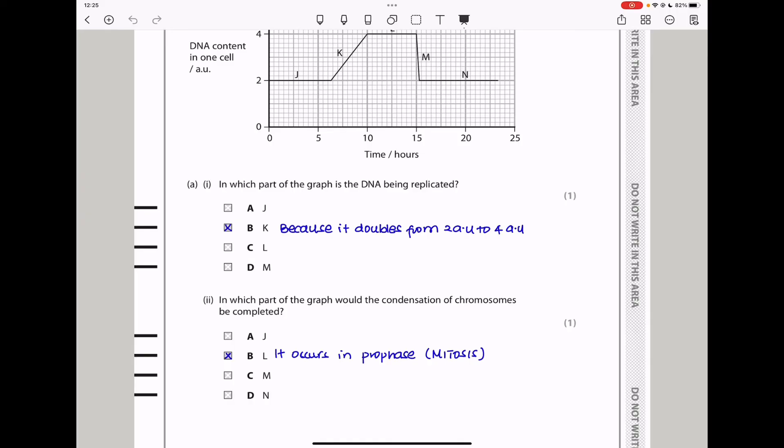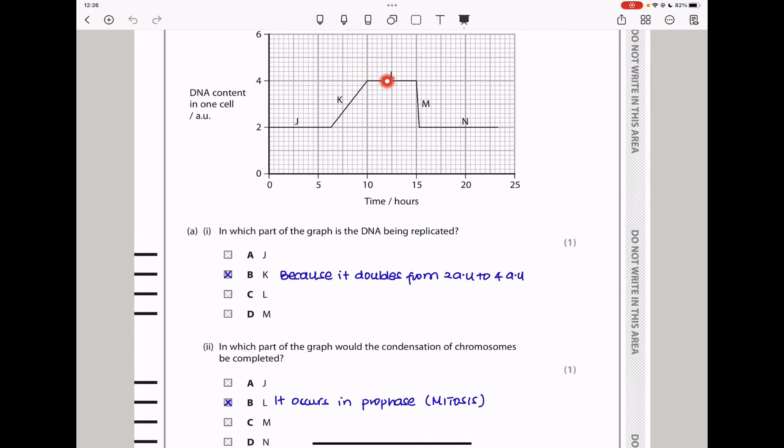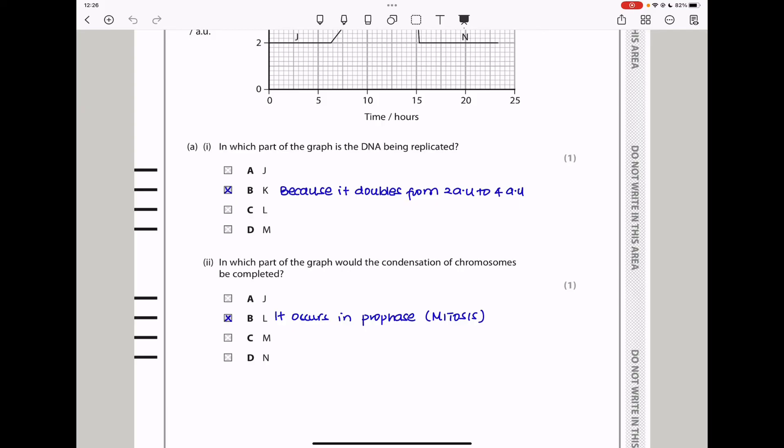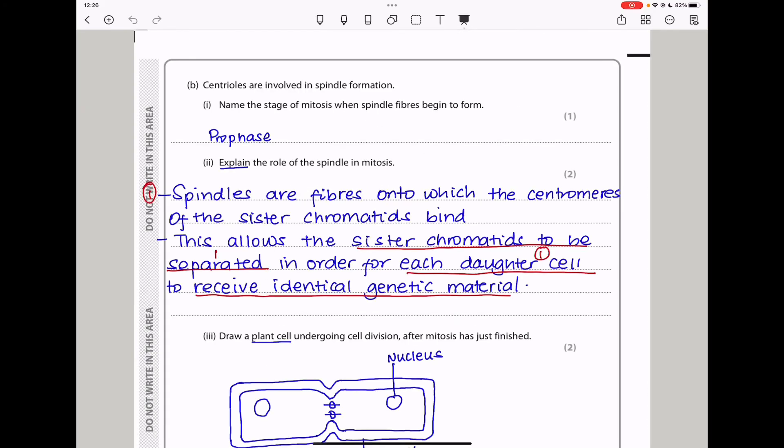The next part says, in which part of the graph will the condensation of chromosomes be completed. In this region, that is where we're going to have prophase or the major part of mitosis, at least before the cell begins to divide. So we can say it's going to be region L. And therefore, the answer should be B. Next, they say, centrioles are involved in spindle formation. Name the stage of mitosis when spindle fibers begin to form. They begin to form during prophase.